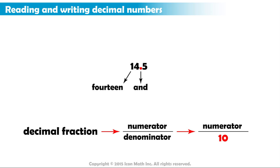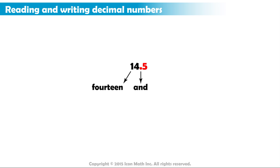So the denominator of the decimal fraction is 10. And what about the numerator? It is 5. This makes our fraction 5 tenths. So we read the decimal part as 5 tenths.